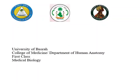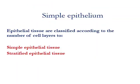Our practical today is simple epithelium. We know that epithelial tissues are classified according to the number of cell layers to simple epithelium and stratified epithelium. Today we talk about simple epithelium. When we say simple epithelium, that means one layer of cells closely packed together and sitting on the basement membrane.